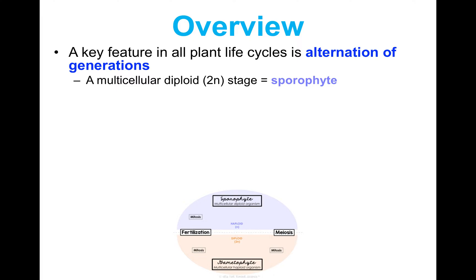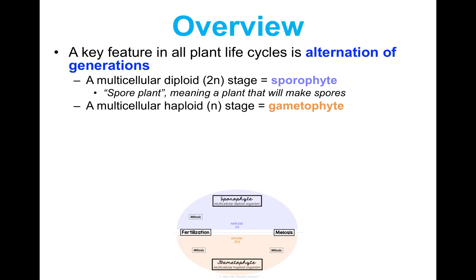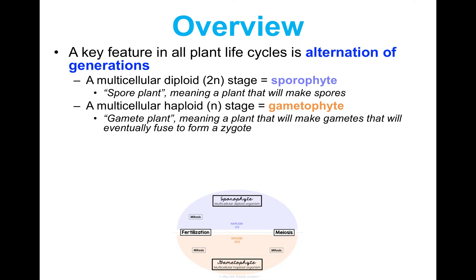In a plant life cycle there are two stages. There is a multicellular generation where it's diploid, and this is called the sporophyte generation. Sporophyte breaks down to mean 'spore plant,' meaning this is the part of the plant's life cycle when it's going to make spores. There is also another multicellular generation where it is haploid, called the gametophyte stage, breaking down to mean 'gamete plant.'